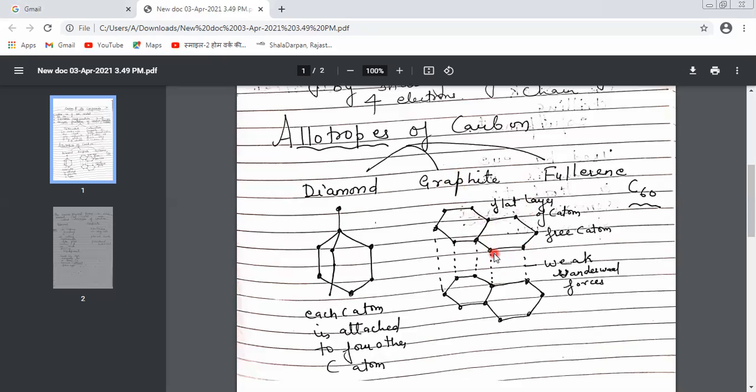Since each carbon is bonded to three carbons with one electron free, the melting point of graphite is lower compared to diamond. These rings are arranged in the form of sheets, making graphite soft in nature. Since one electron is free in graphite, it can conduct electricity, has low density, and is soft and slippery to touch.